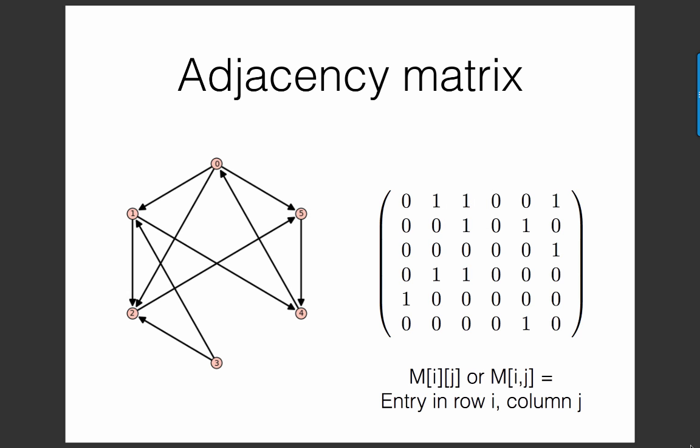There is no edge pointing from node 5 to node 3, so in the 5, 3 entry, which is here, there is a 0.